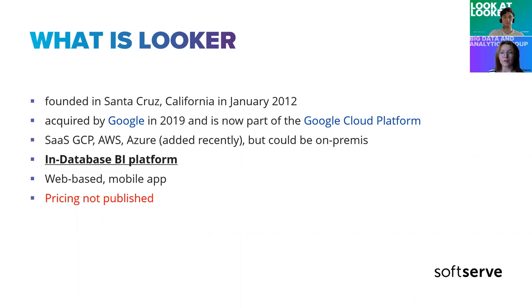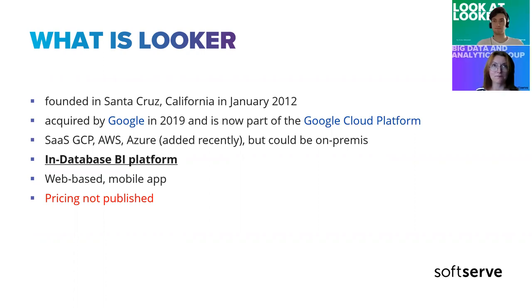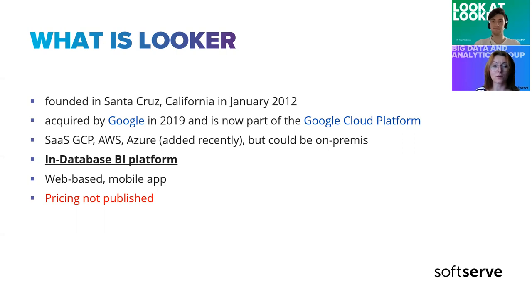What makes Looker different from other BI platforms is that it is a fully in-database platform. All your actions are run in the database. There is no separate data engine — unlike Tableau, where you can gather files and data from databases and Tableau works using its own engine to aggregate that data. In Looker, everything is just in-database.